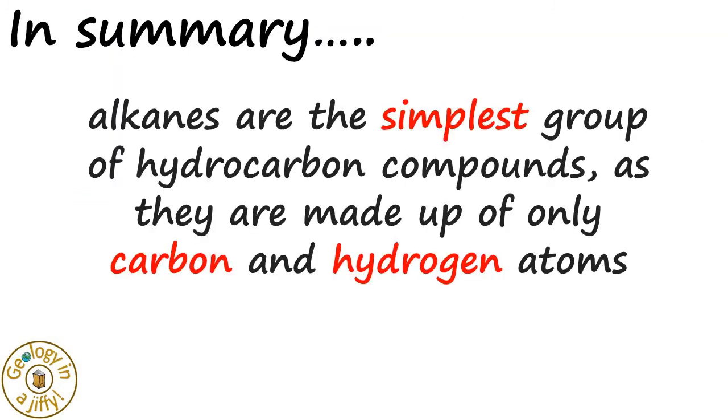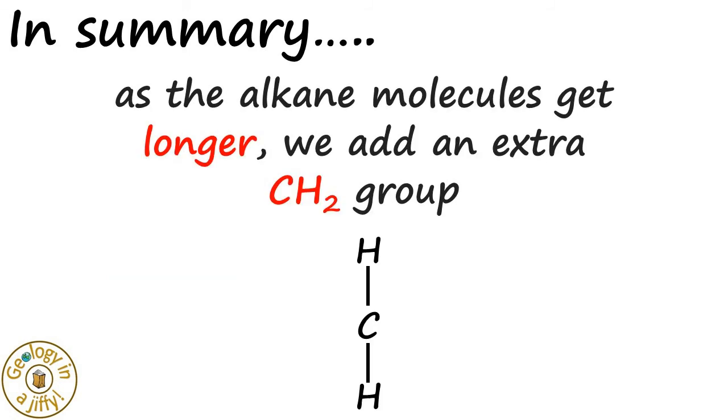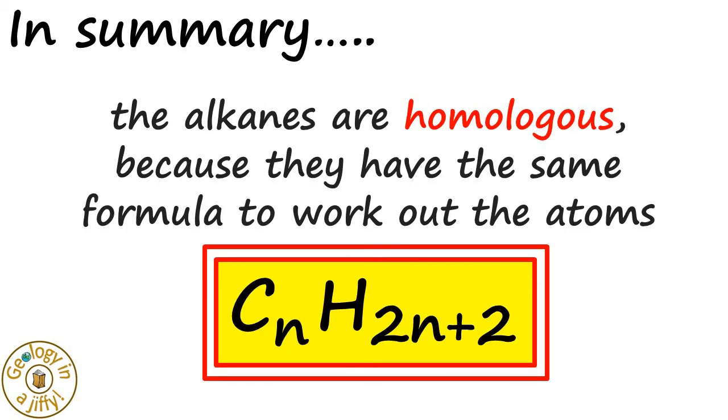In summary, alkanes are the simplest group of hydrocarbon compounds, as they are made up of only carbon and hydrogen atoms. As the alkane molecule gets longer, we add an extra CH2. The alkanes form a homologous series, because they have the same formula to work out the atoms, i.e., CnH2n+2.